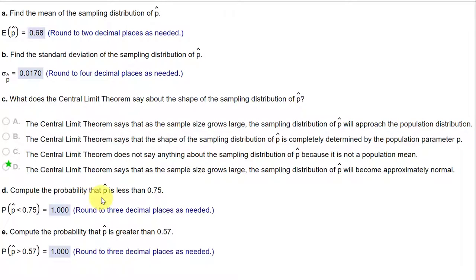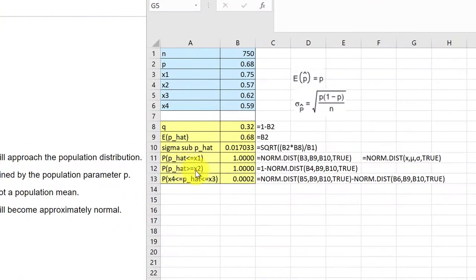Calculate the probability that p hat is less than 0.75, and the probability that p hat is greater than 0.57. Over here in my Excel spreadsheet, I put the first cell there, the probability of p hat less than or equal to x1. x1 is 0.75. And we get that answer using the norm.dist function.